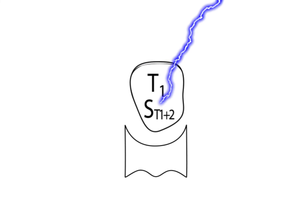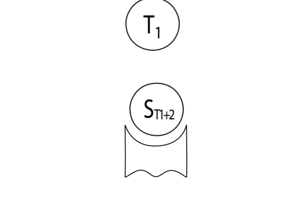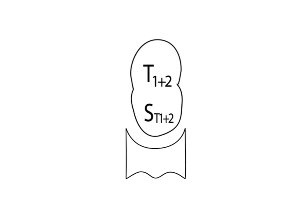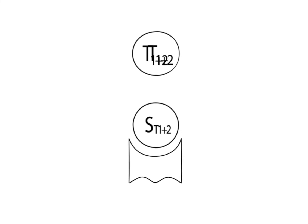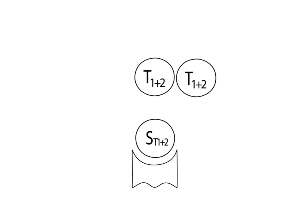Considering the multi-step model of carcinogenesis, a tissue stem cell must be hit several times in order to give rise to a full-blown malignant tumor. In the present example, the tissue stem cell ST1, which has already been hit once, is hit by a second event. The progenitors from this stem cell marked T1 plus 2 divide more often than the T1 cells.